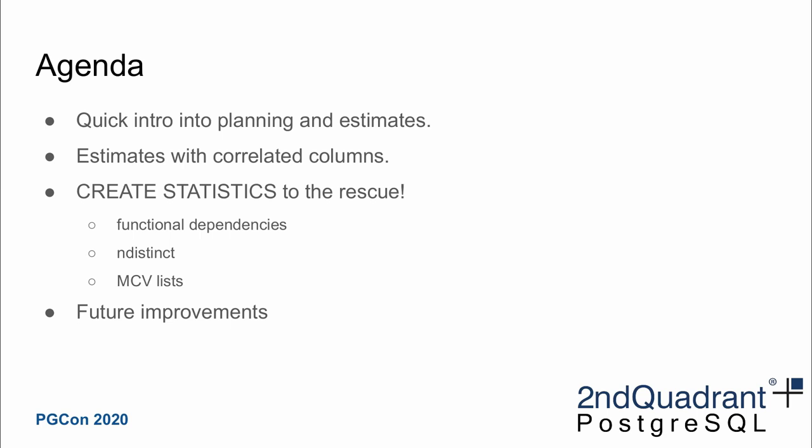We will quickly go through the three statistics types available in Postgres 12: functional dependencies, distinct coefficients, and most common value lists. At the end of the talk I will briefly discuss plans for the future — what might be added and what possible enhancements there are.